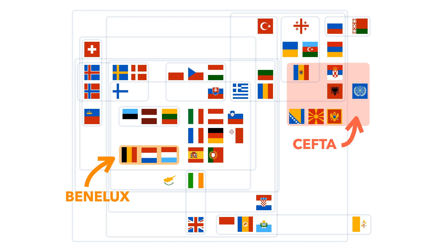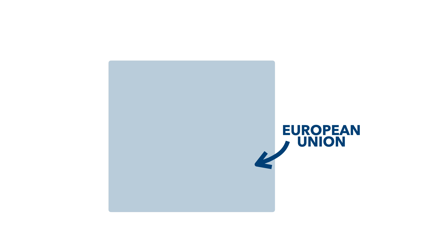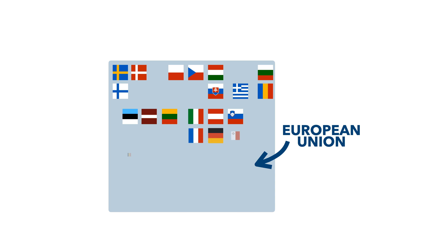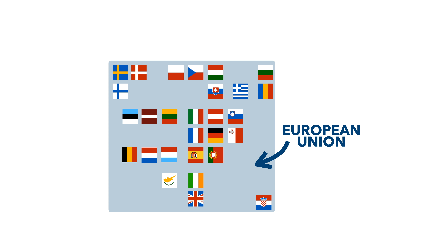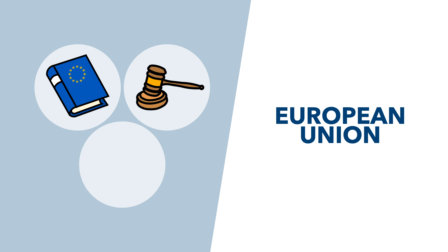Let's start with the core of this diagram, the European Union. It's a political union currently comprising of 27 member states, formerly 28. This truly is the core of the diagram, with these countries sharing laws, judicial oversight, and sometimes even borders.